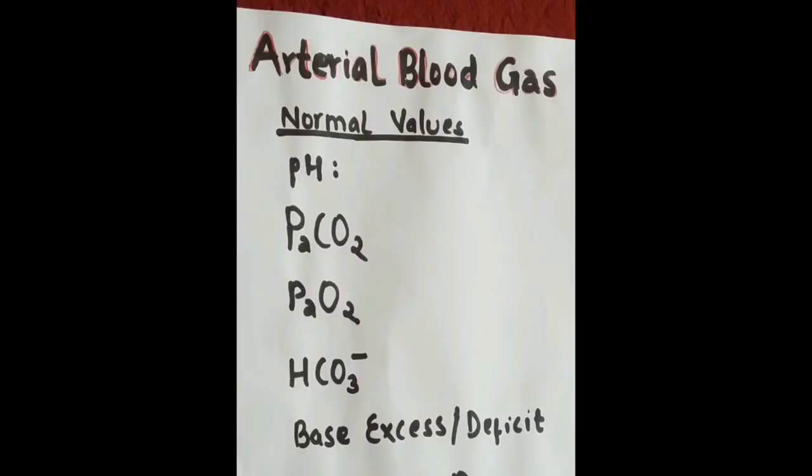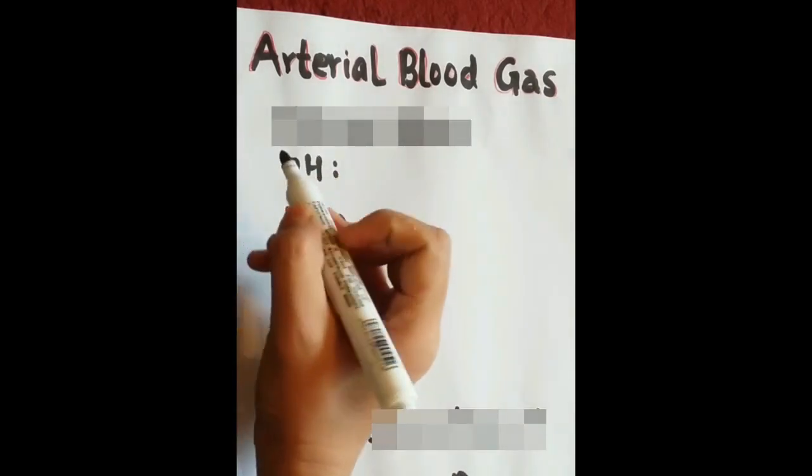While analyzing blood gases, there are 5 things we should put our focus on. Let's learn what are these 5 things. First is pH. It defines whether blood is acidic or basic.